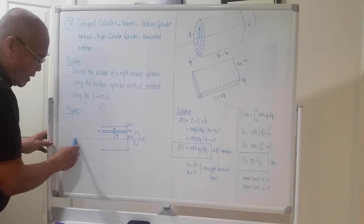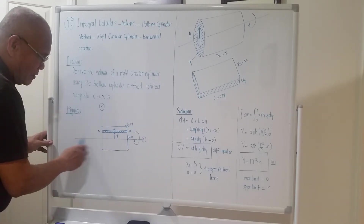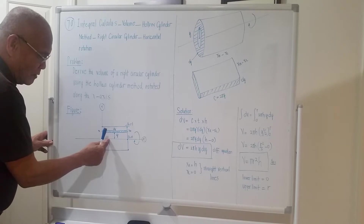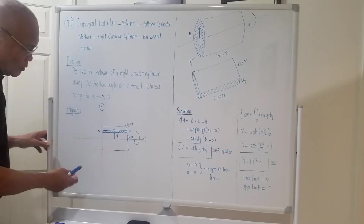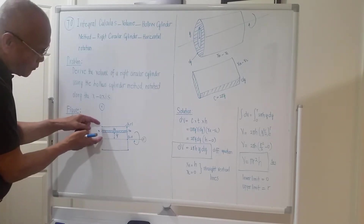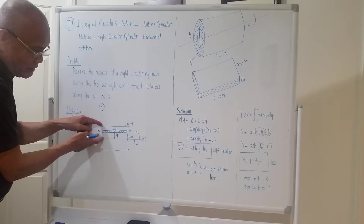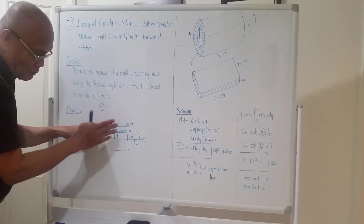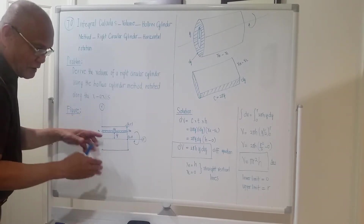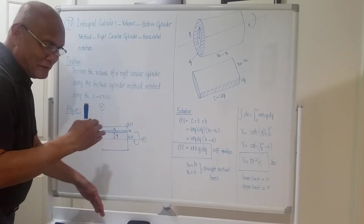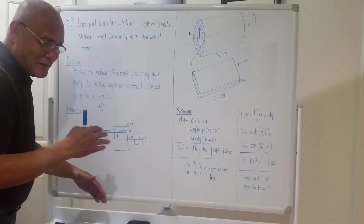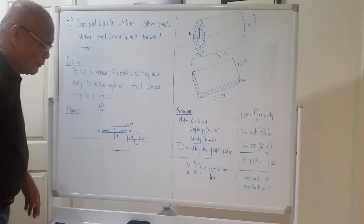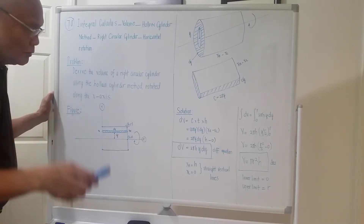One half of the cylinder is on top of the x-axis and one half is below the x-axis, such that when we rotate it, it will be symmetrical. Now let's draw the horizontal slice.